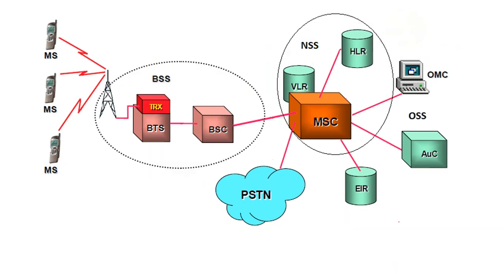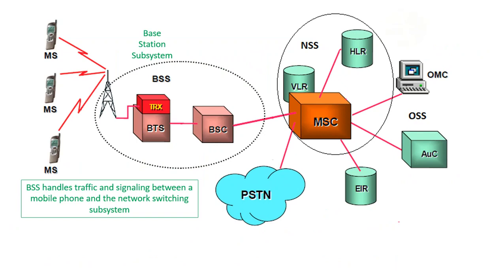Now we are going to learn about BSS, NSS, and OSS. BSS is the Base Station Subsystem. BSS handles traffic and signaling between a mobile phone and the network switching subsystem. BSS has two components: BTS and BSC.